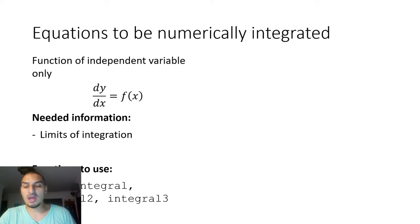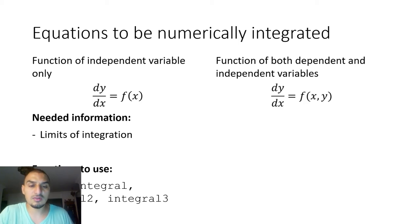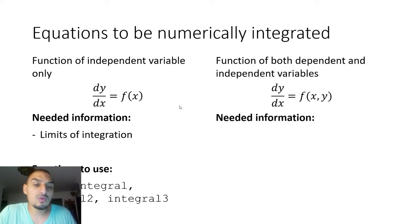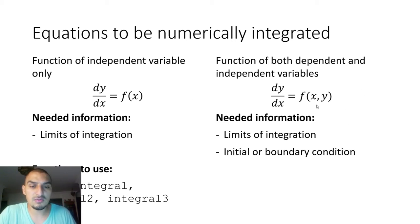The other type of equation is where dy/dx is a function of both the dependent and independent variables — the general form is dy/dx = f(x, y). In this case you need more information: the limits of integration and also the initial or boundary condition. So you need three pieces of information, whereas in the first type you only needed two — the extra piece comes from having y in the function.